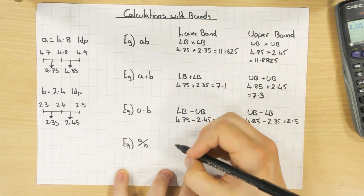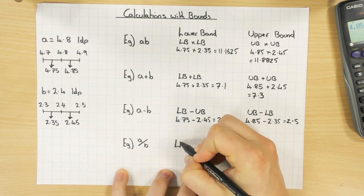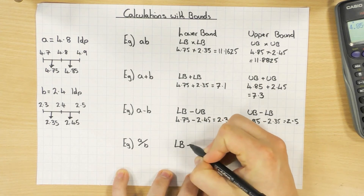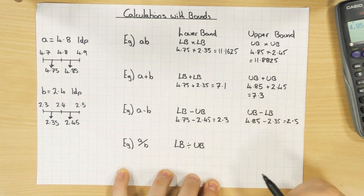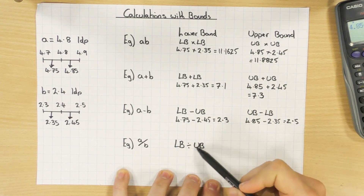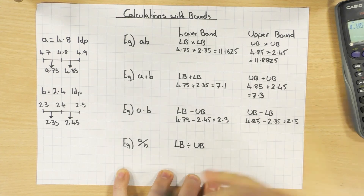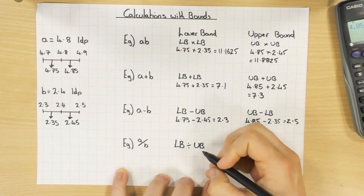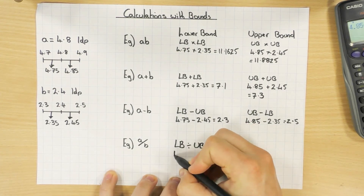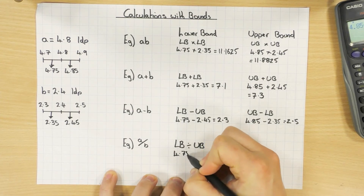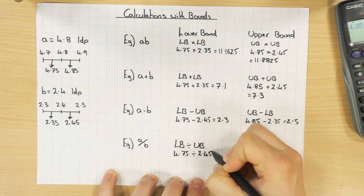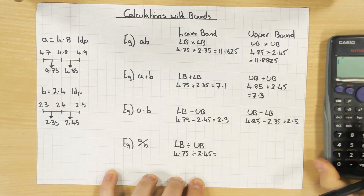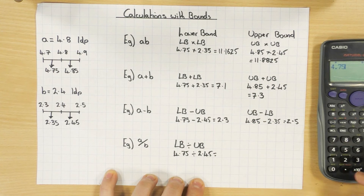For division: to get the smallest possible value, use the smallest value divided by the biggest value. Because dividing by a bigger number gives a smaller result. So the lower bound of a ÷ b is: lower bound of a divided by upper bound of b — that's 4.75 ÷ 2.45.